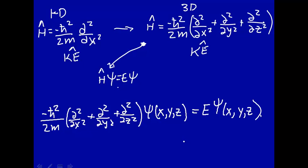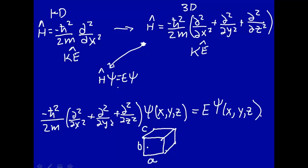Now we have to solve the Schrödinger equation for the three-dimensional particle in a box — find the three-dimensional wave functions and their associated energies. The box has dimensions a in the x direction, b in the y direction, and c in the z direction.